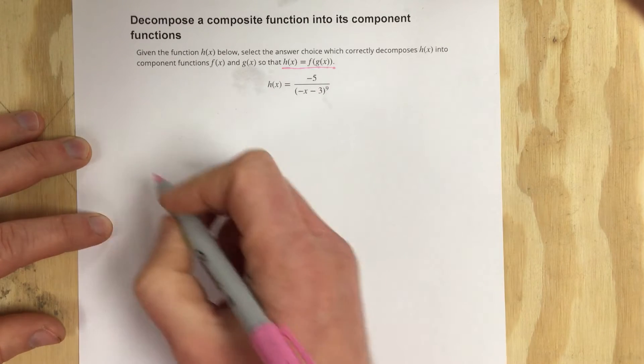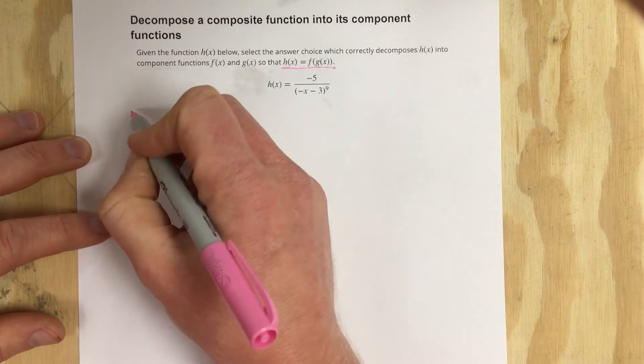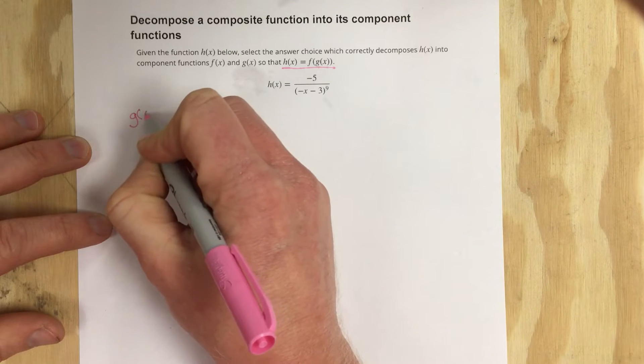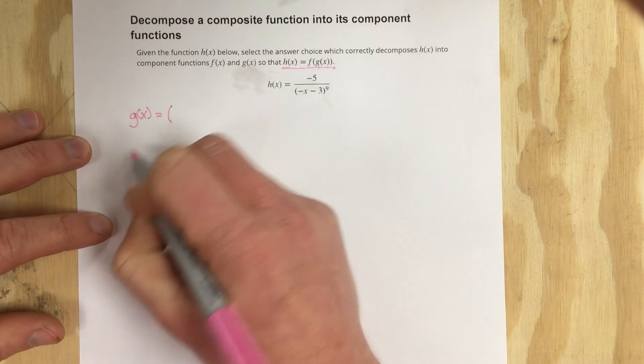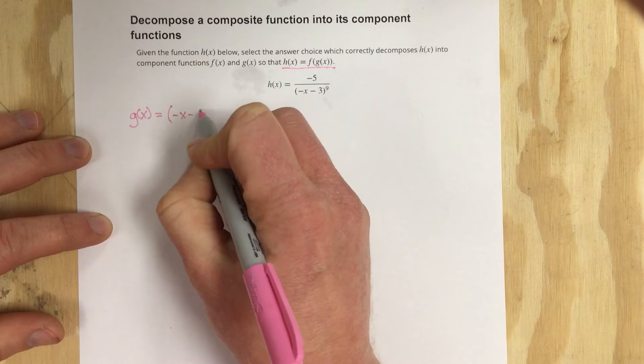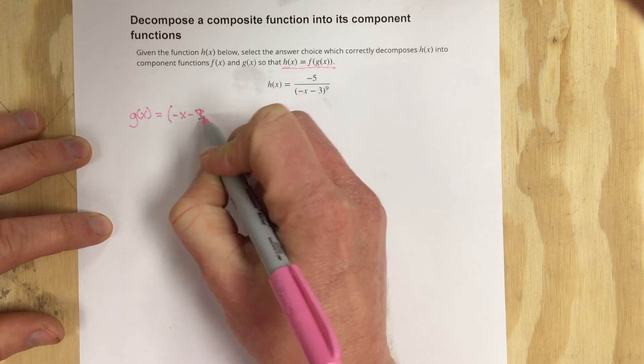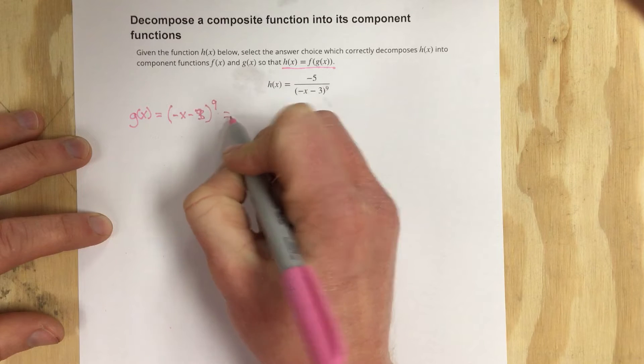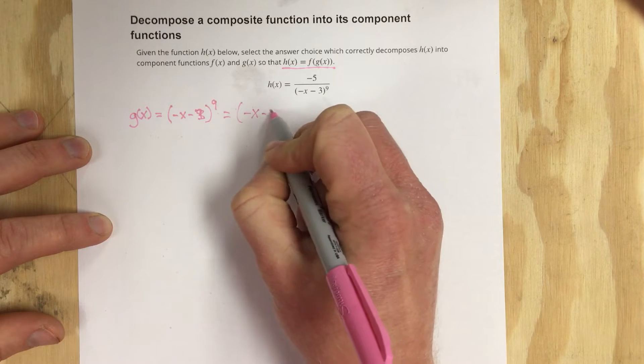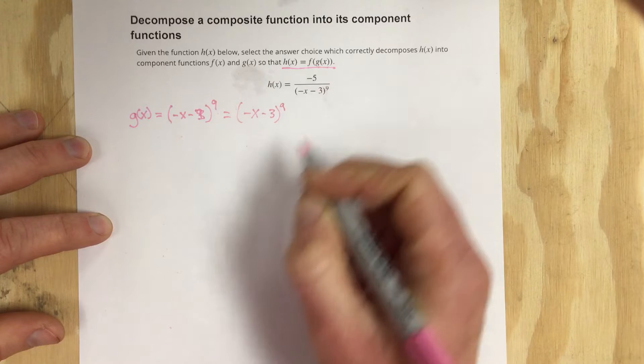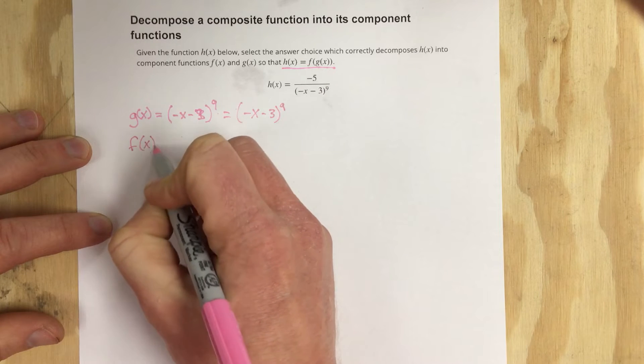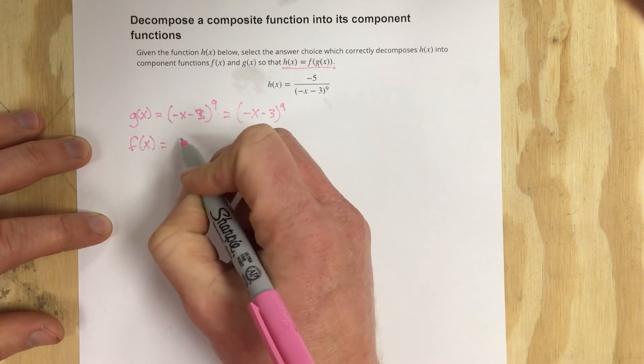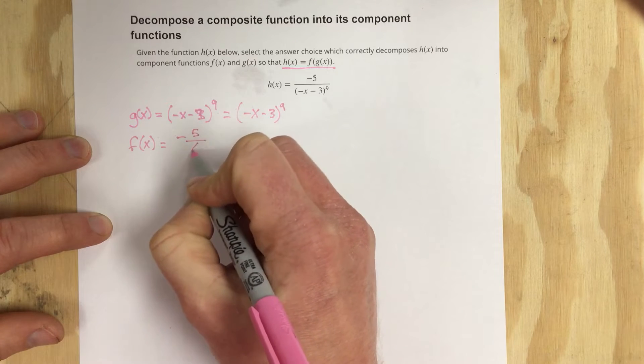The first option would be if I say g of x is equal to the denominator. I could write that as negative x minus 3 to the 9th. And then that would mean that f of x would have to be negative 5 over x.